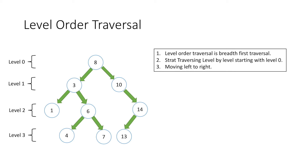Starting with level 0, as there is only one node at this level, we will simply print 8. Next we move on to level 1, and as there are 2 nodes — 3 and 10 — we start from left and move towards right. So first we print 3 and then 10. Similarly at the next level we have 3 nodes: 1, 6 and 14. Starting from left we print 1, then 6, and finally 14.